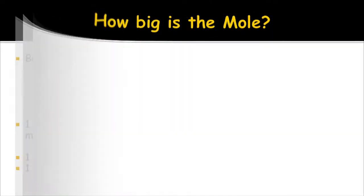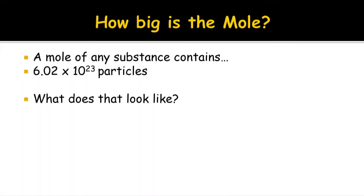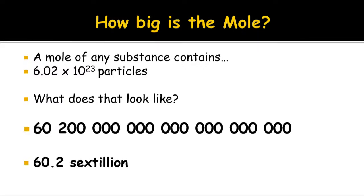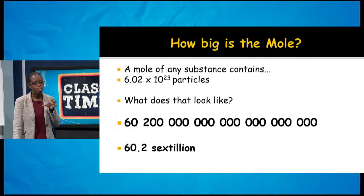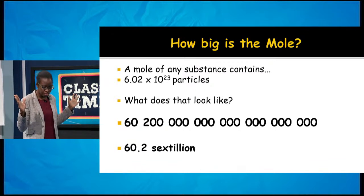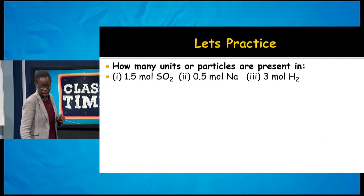How big is this mole? Think of a thousand, a million, and keep expanding. A mole — 6.02×10²³ particles — represents 60 followed by about 21 zeros. Essentially, that would be 60.2 sextillion. So if I have a mole of any substance, the number of particles in that substance is 60.2 sextillion particles — too big for us to even consider.